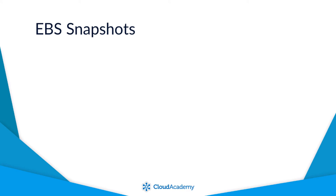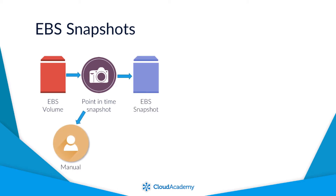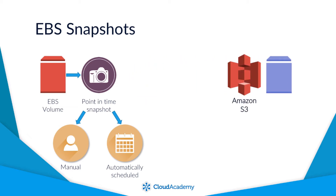EBS offers the ability to provide point-in-time backup snapshots of the entire volume as and when you need to. These backups are known as snapshots. You can manually invoke a snapshot of your volume at any time, or create some code to perform this automatically on a scheduled basis. The snapshots themselves are then stored on Amazon S3 and so are very durable and reliable. The snapshots are incremental, meaning that each snapshot will only copy data that has changed since the previous snapshot was taken.